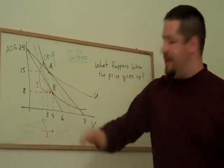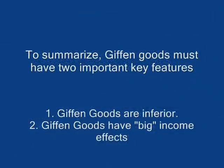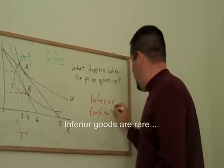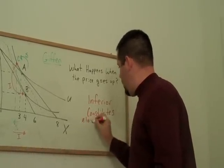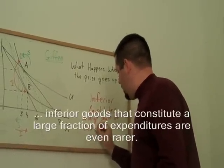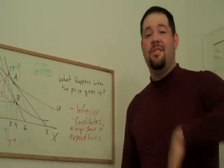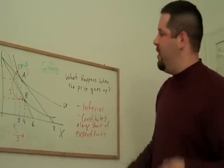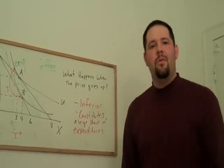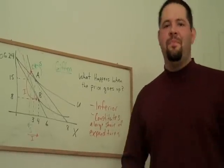So, it's an inferior good that has a big effect on how much you're actually going to consume. It has to be an inferior good that constitutes a large share of expenditures. So, this tells us a lot about what these Giffen goods are. It has to be inferior. It has to constitute a lot of what you spend your money on. And so, if you're going to be looking for a Giffen good, you're going to have to be looking for someone who spends a lot of money on something that they don't really want to spend their money on. They have to spend a big fraction of their money on something that if their income went up, they would buy less of that.